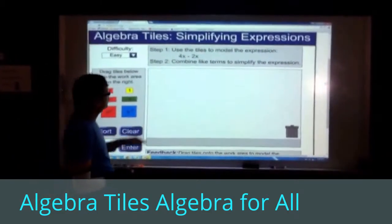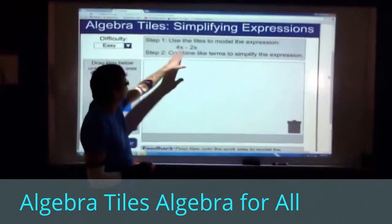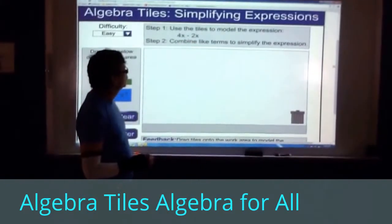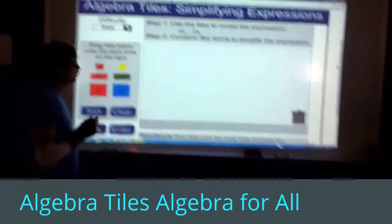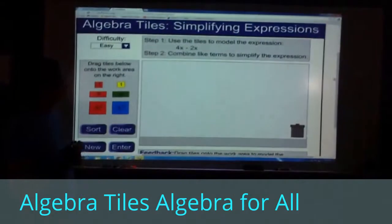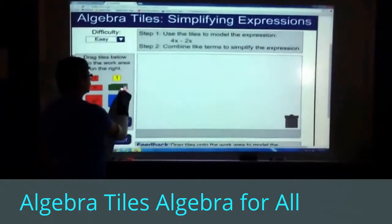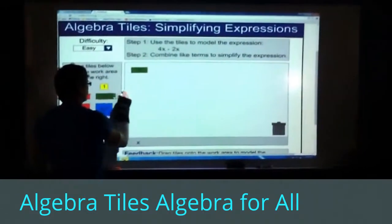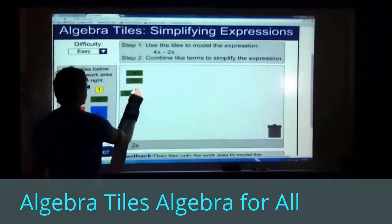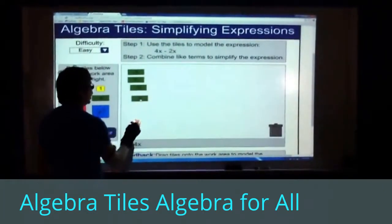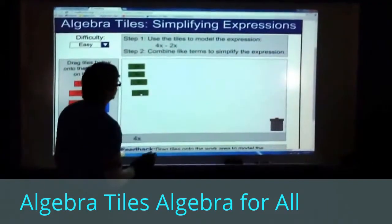We want to simplify this expression, 4x minus 2x. If we can model 4x minus 2x, we can understand why this simplifies. So 4x just means four x's added together, so I'm going to add four x's together over here, and I'm going to combine that with two negative x's.